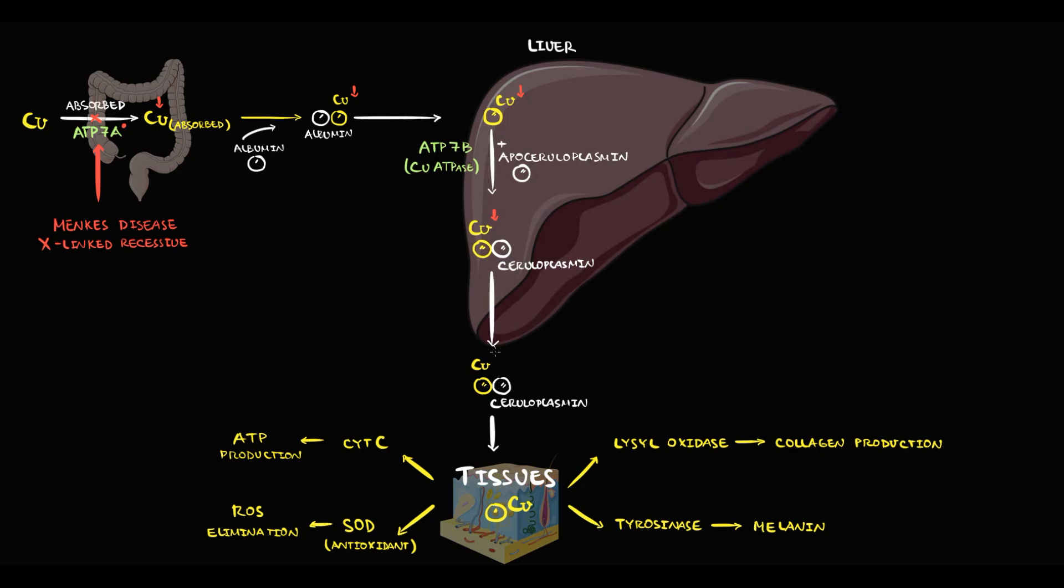And obviously, with decreasing ceruloplasmin production, the level of ceruloplasmin in the blood will decrease. Because ceruloplasmin is the major transporter of copper, with decreasing ceruloplasmin level, the delivery of copper to peripheral tissues will decrease. And this creates a huge problem. Without copper, lysyl oxidase cannot work. As a result, collagen production decreases.